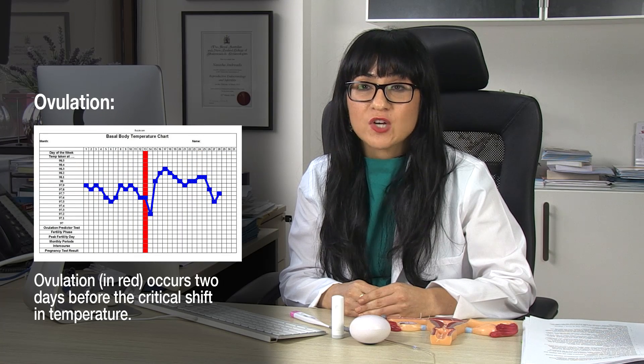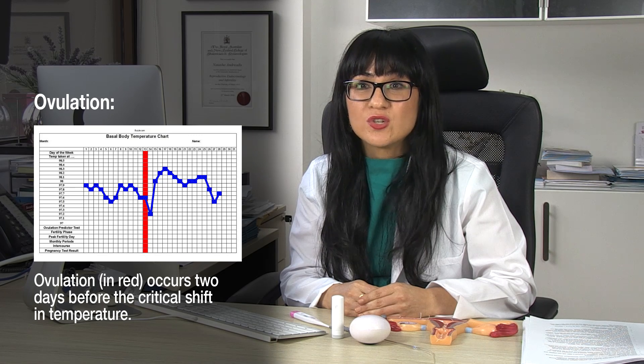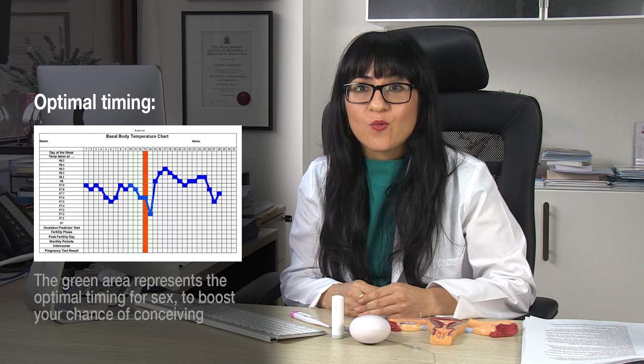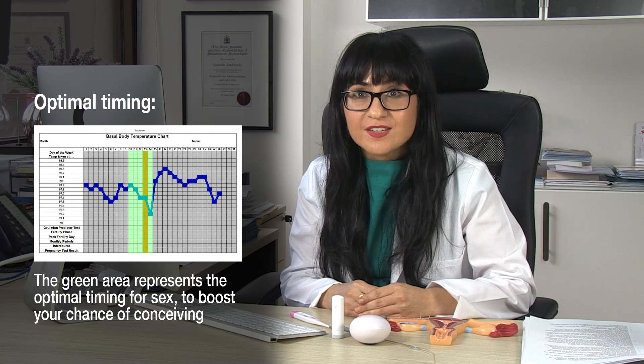Measuring your basal body temperature is really important because you'll be able to see a shift in your body temperature. Over time you'll see a pattern — you'll be able to see when you've ovulated, because ovulation occurs two days before that rise. It'll help you predict when to have sex to maximise your chances of pregnancy.